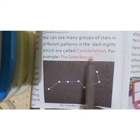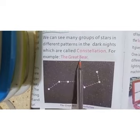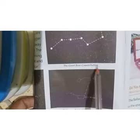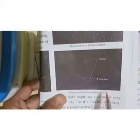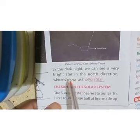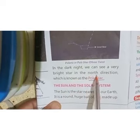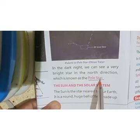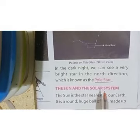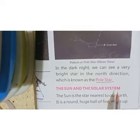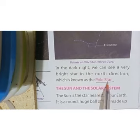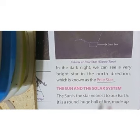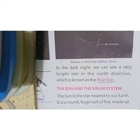For example, the Great Bear constellation. In the night we can see a very bright star in the north direction which is known as the Pole Star. The Pole Star never changes its direction — it always remains in the north direction.